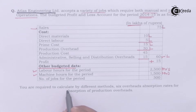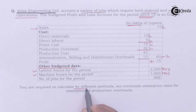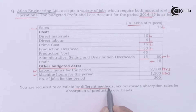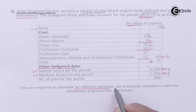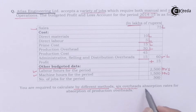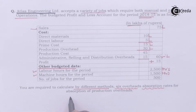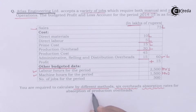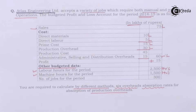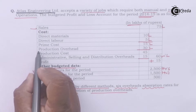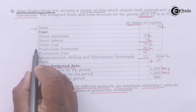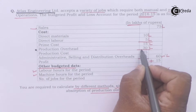You are required to calculate by different methods six overhead absorption rates for absorption of production overheads. Here, production overheads are 30 lakhs.